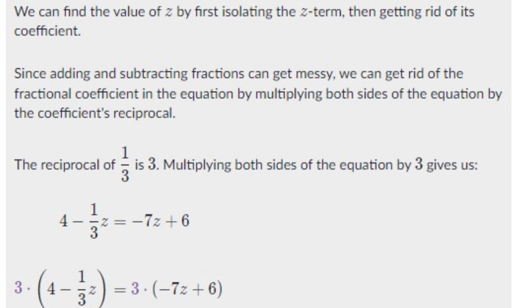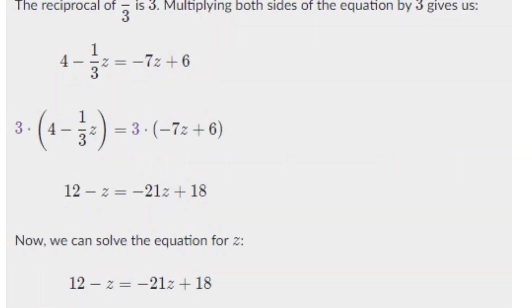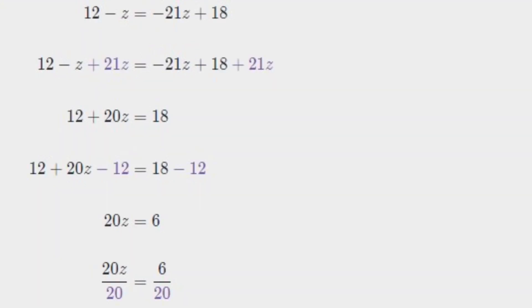Multiplying both sides by 3, we can cancel out the coefficient of Z. So we can simply write: 12 minus Z equals minus 21Z plus 18. Now we can solve the equation for Z. We will add 21Z to both sides. Therefore 12 minus Z plus 21Z equals minus 21Z plus 18 plus 21Z, giving us 12 plus 20Z equals 18.